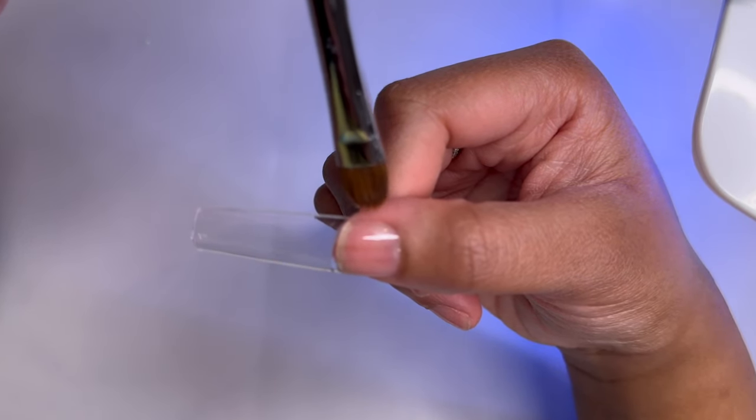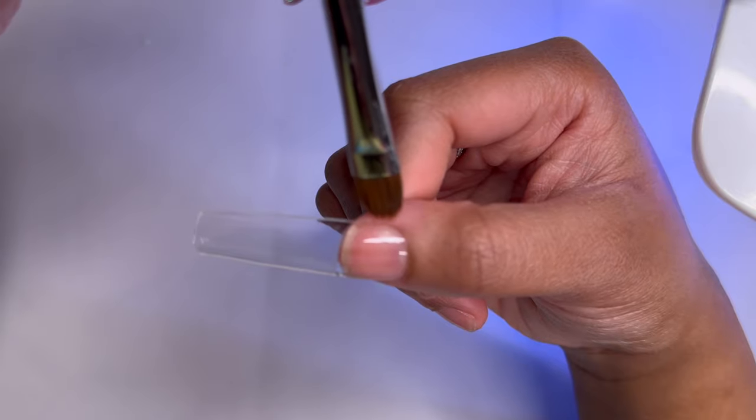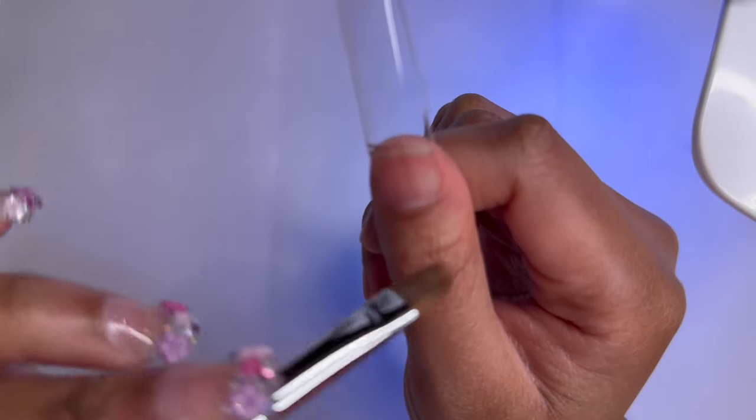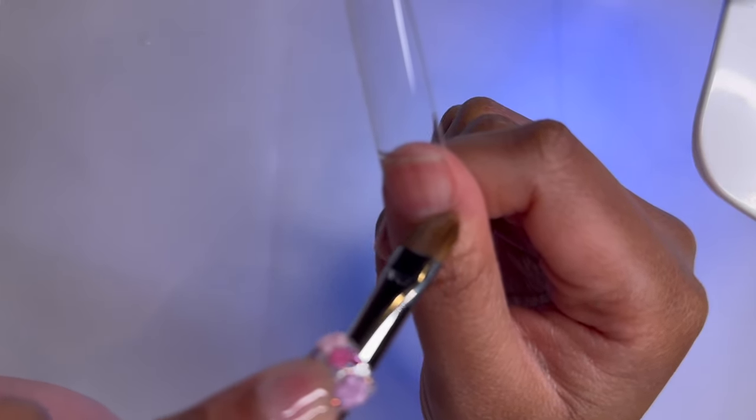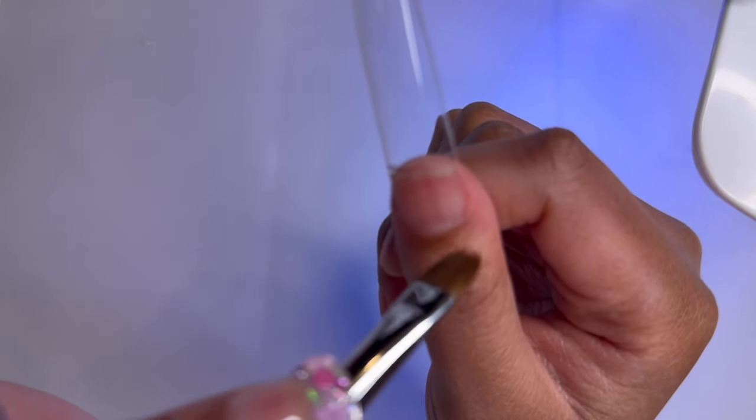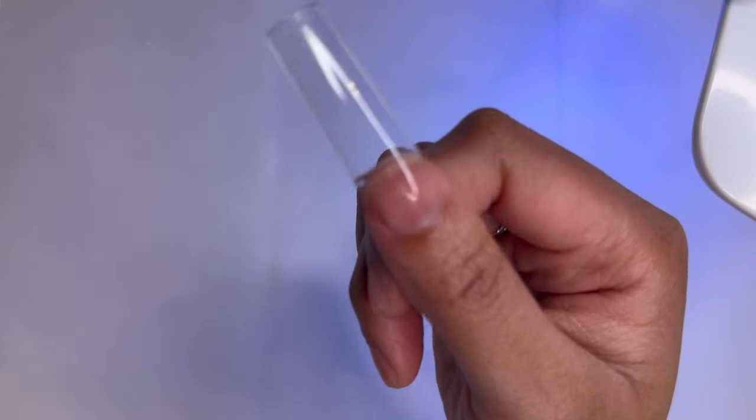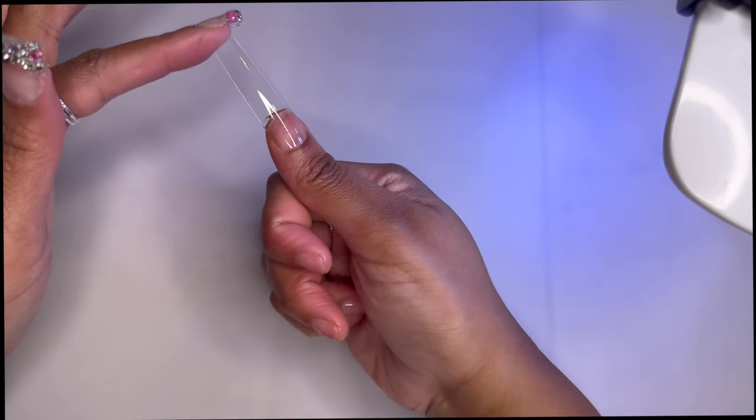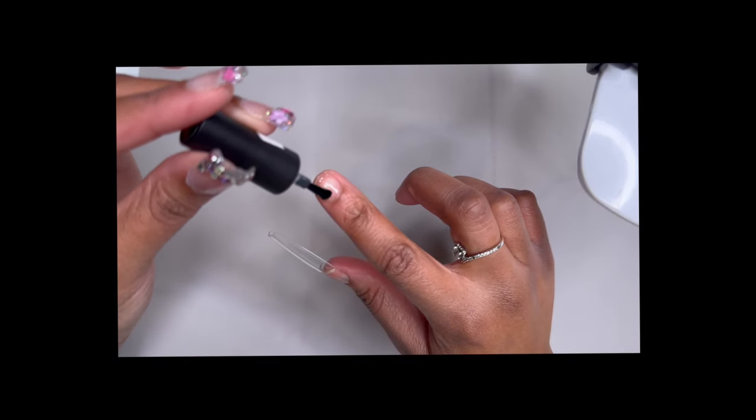I am working with my non-dominant hand so I did have some overspill. If this happens with you it's totally okay, just grab a clean brush and some alcohol and you can wipe away any excess gel. I'm just going to follow these steps for the rest of my nails.